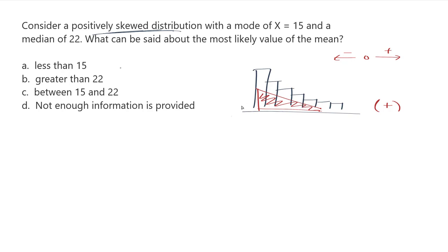Okay, so let's go back and read the rest of this. Consider a positively skewed distribution with a mode of 15. So if I have just one mode, then that's going to be this highest point here, the highest frequency is the mode. A median of 22, so further up somewhere, is going to be the median.